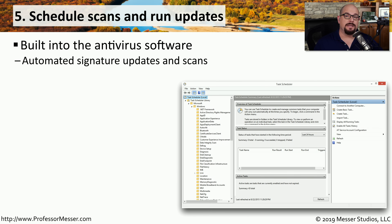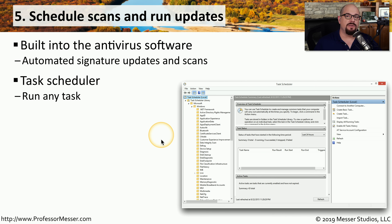Now that the remediation process is done, we can assume we've removed the malware. At this point, we want to make sure we're not infected again — schedule scans not only to check for malware but also to ensure everything is up to date with the latest software versions. If your anti-malware software doesn't have automatic updates, you can use the Windows Task Scheduler to run tasks that update those particular files.